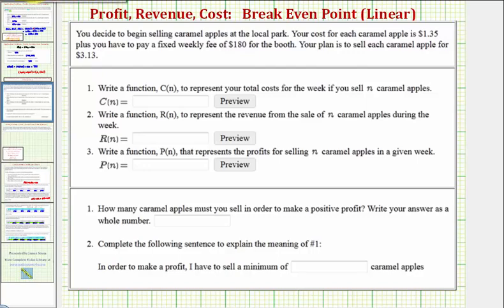Notice how the cost has two components. Each apple costs $1.35. There's also a weekly fee of $180 for the booth. So there are two components to the cost: the variable cost, the cost of the apples, and the fixed cost, the cost of the booth.